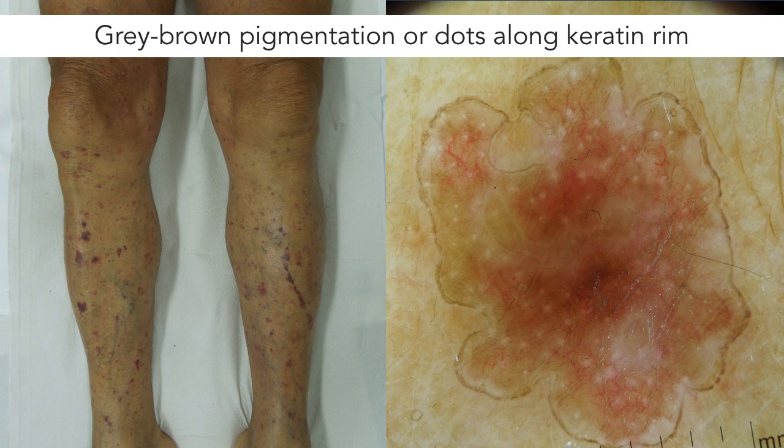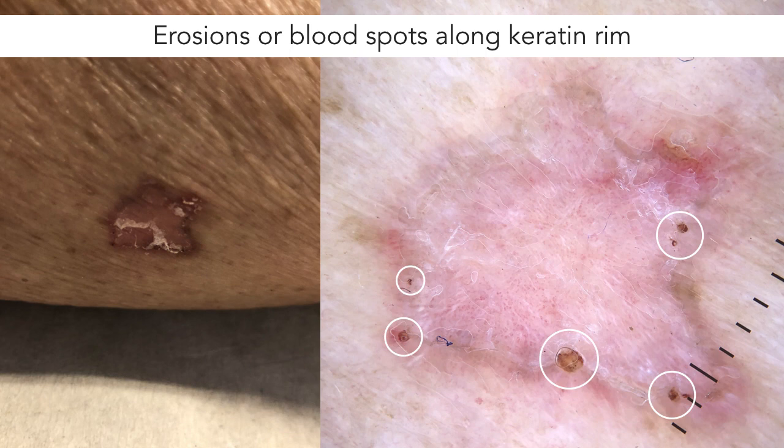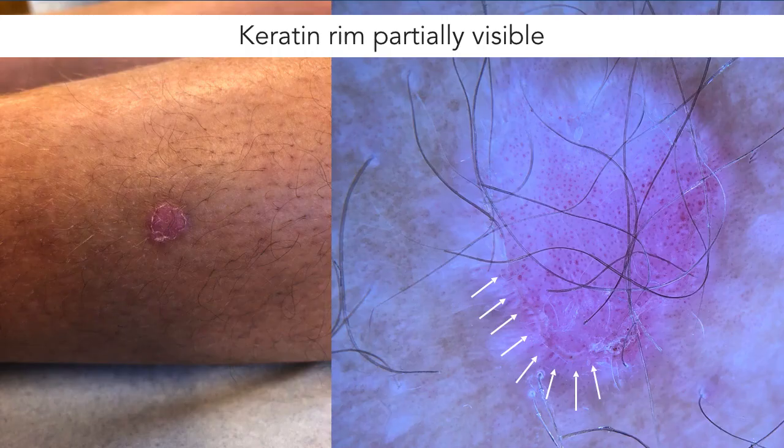Another dermoscopic feature that can be observed sometimes along the keratin rim are small erosions with or without blood spots, as highlighted by the white circles here. Since the keratin rim is so important for the dermoscopic diagnosis of porokeratosis, it's important to be aware that it's sometimes only partially visible. In very rare cases, we can't find a keratin rim at all.